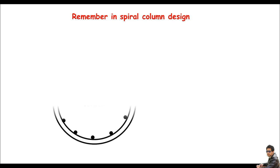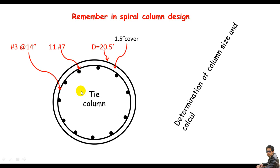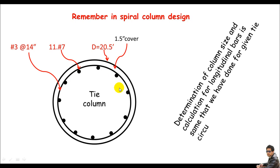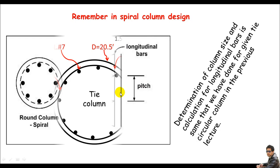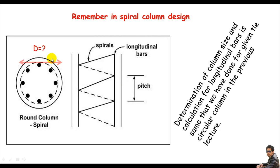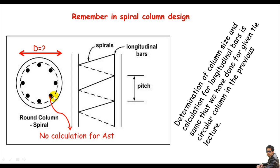In spiral column design, just remember: we'll do nothing for the column size calculation, and we'll not do calculation for main steel bars either. The determination of column size and calculation for longitudinal bars is just the same as what we have done for the circular tie column in the previous lectures. So no calculation will be required for Ag or for main steel area Ast. To learn those, just watch the previous three lectures. Here I'll do only the spiral calculation.